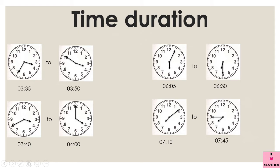The movement of the clock is always like this: from 12 to 1 to 2 to 3 to 4 to 5 to 6 and so on. So after 7, the clock will go 5 minutes till 8, another 5 minutes till 9, and another 5 minutes till 10. So how many minutes? 5 plus 5 plus 5 is 15 minutes. If you add 15 minutes to 3:35, you get 3:50. The answer is 15 minutes.